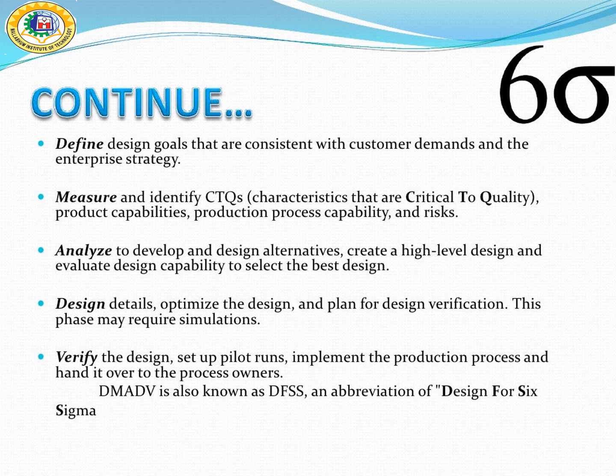Measure: Next comes measuring the factors that are critical to quality, or CTQ. Steps taken should include defining requirements and market segments, identifying the critical design parameters, designing scorecards that will evaluate the design components, reassessing risk, and assessing the production process capability and product capability.